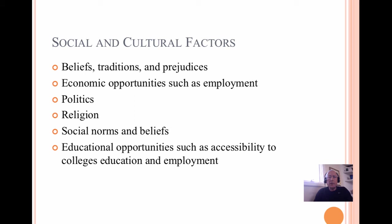Social-cultural factors affect health as well: beliefs, traditions, prejudices, the choices people make in what they eat, what they drink, the number of sodas they consume every day, economic opportunities available, and political climate. Religious institutions also help a great deal with working with families. Many times, in order to enter a community, you need to work with religious institutions. For example, the Korean community in Los Angeles has about 5,000 to 6,000 members. We look at social norms and beliefs, educational opportunities, number of high school graduates, how many drop out of school, employment opportunities, gang membership, and so on — all of which affect unemployment.